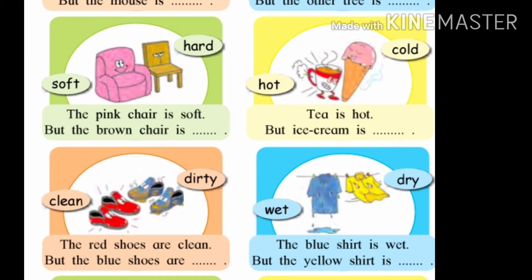Now come to the next picture. Two shirts are given — one is blue shirt and another is yellow shirt. Wet is the word written near the blue shirt, and dry is the word written near the yellow shirt. The blue shirt is wet but the yellow shirt is dry. Wet and dry, these are the opposite words. Wet means ole, dry means sukha lele.